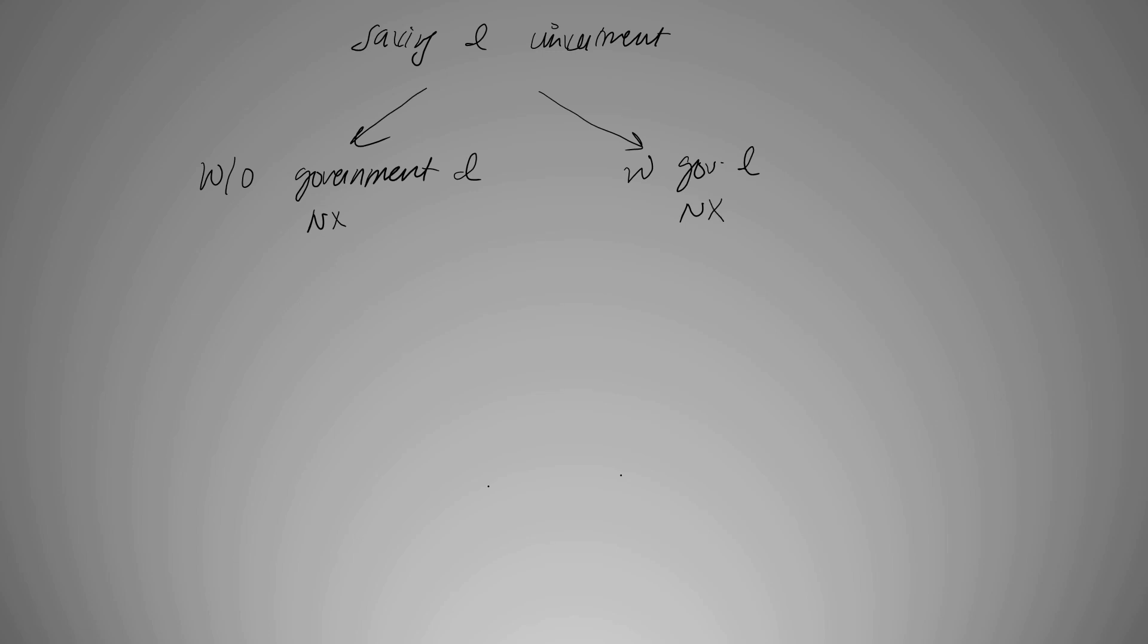Okay, so first let's begin with this one. We know that AD is equal to C plus I when we are not considering G and NX. Originally it's AD is equal to C plus I plus G plus NX, but here we are considering without government and net exports, so it's just going to be I and C.